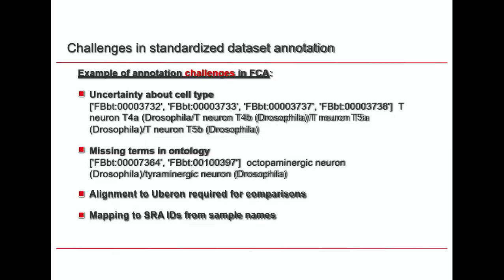There are also sometimes missing terms in ontology. For these two neurons, we looked for the least common ancestor but there were no close terms available. In order to compare between species later, we also aligned all terms to Uberon, which can also be difficult. When looking for metadata in SRA, we also have the problem that sample names are usually very different from the sample names provided by the authors in the paper.